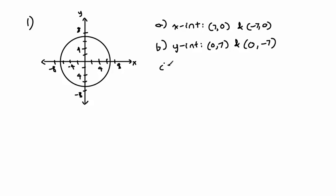And then for c, we have to state the radius. The radius is equal to — look, counting 1, 2, 4, 6, 7. Here's 7, here's 7, here's 7, here's 7. So that's the radius of the circle — the radius is 7.